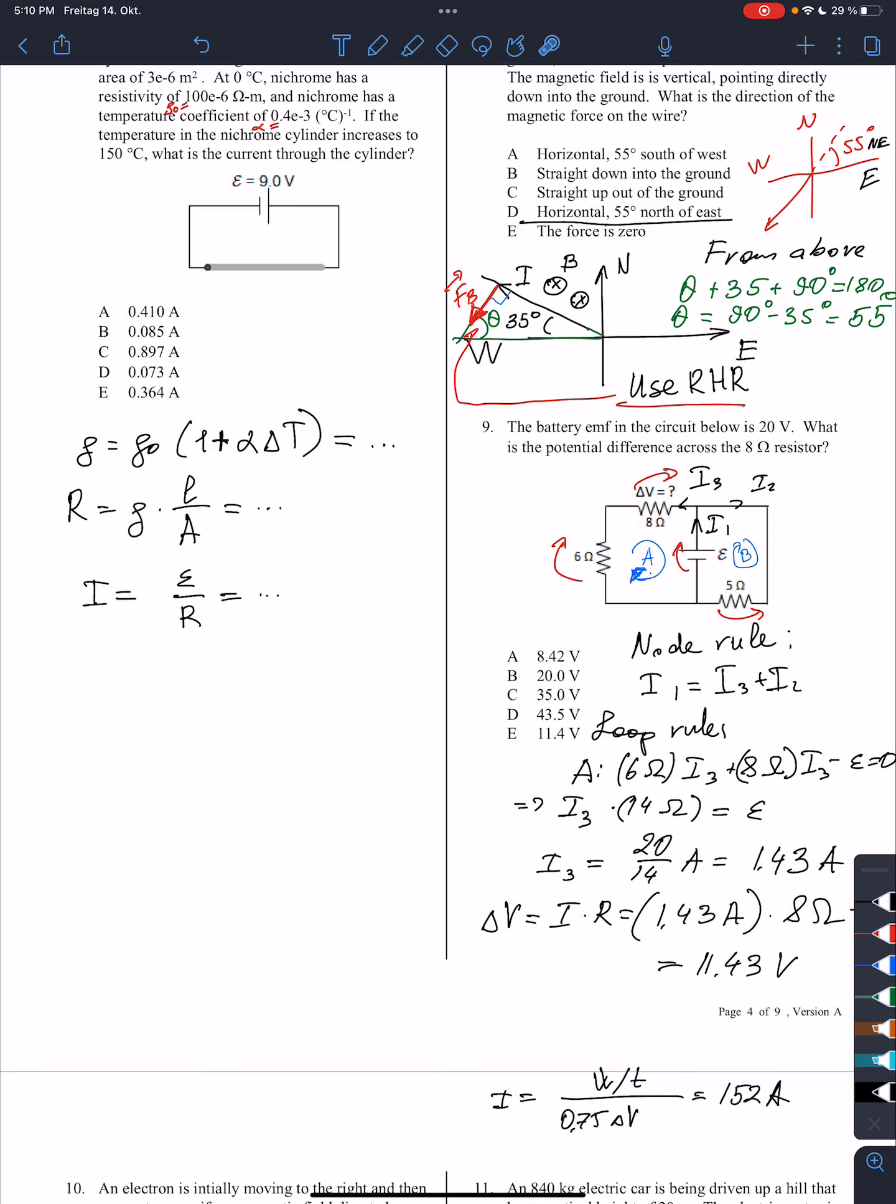Number nine. Okay, we need to find the potential difference across this resistor. Okay, so I will use, I will again use Kirchhoff's rules to solve this problem. I will first identify all the currents. This is i1, this is i2, this is i3.